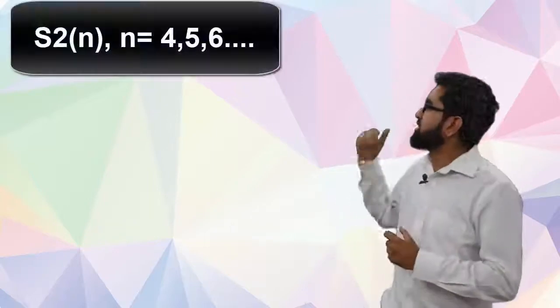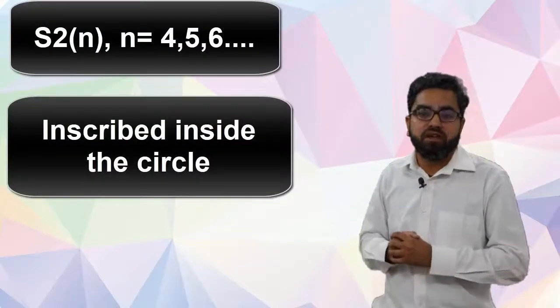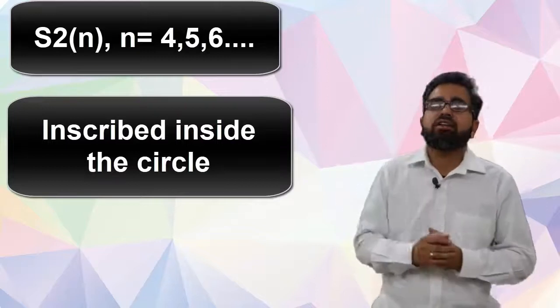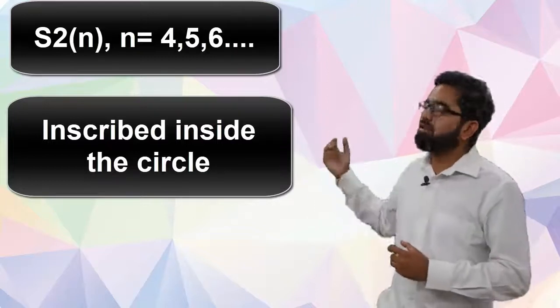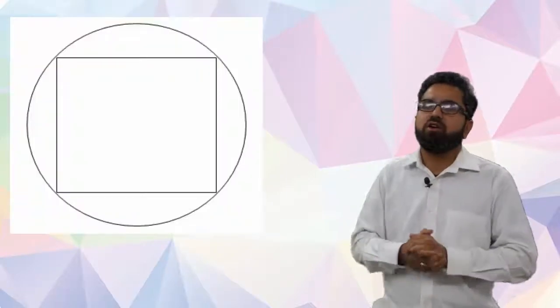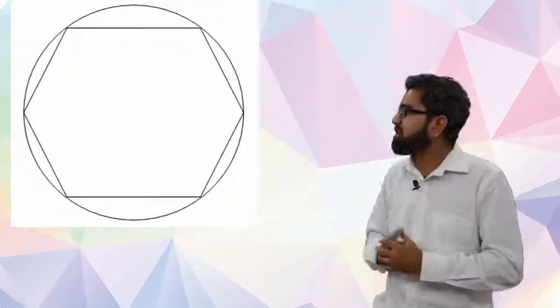And n is varying from 4 to n as written. Now there's another family of polygons which is S2 which are inscribed inside the circle. Now here again n is varying from 4 to n, so that means it can be a square inside a circle or it can be pentagon or it can be hexagon.